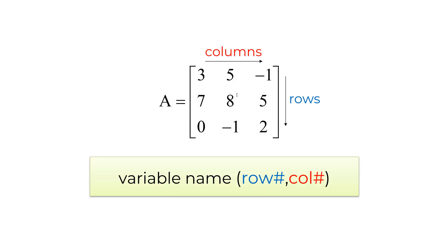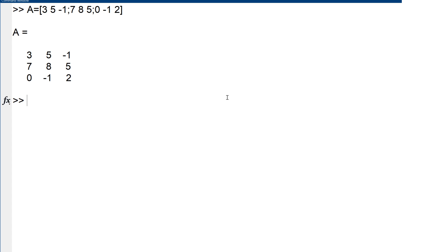To access the elements in the matrix, you can use parentheses with row and column numbers with a comma as a separator. The first argument should be row index number, and the second should be the column index number. To access the element in the second row and third column, you can type A parentheses 2 comma 3. You can see 5.